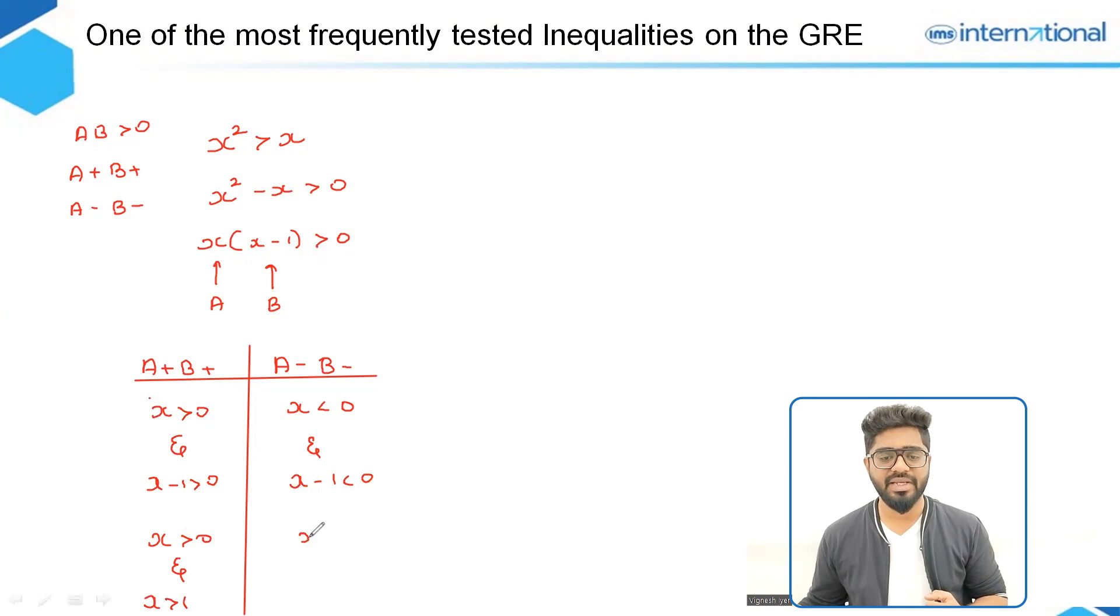Now on the right, this will be X is less than 0 and X is less than 1. Now when we say X is greater than 0 and X is greater than 1, the common shaded region becomes X is greater than 1. So this can be simplified as X is greater than 1.